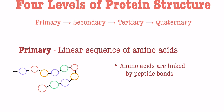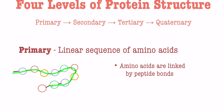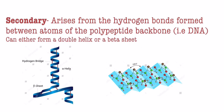Let's start with the primary structure. The primary structure is just a linear sequence of amino acids, and amino acids are linked by peptide bonds. If we look at this picture I've drawn, these circles are my representation of amino acids and these black lines are the peptide bonds. So the primary structure of a protein is essentially amino acids just strung along in a line.